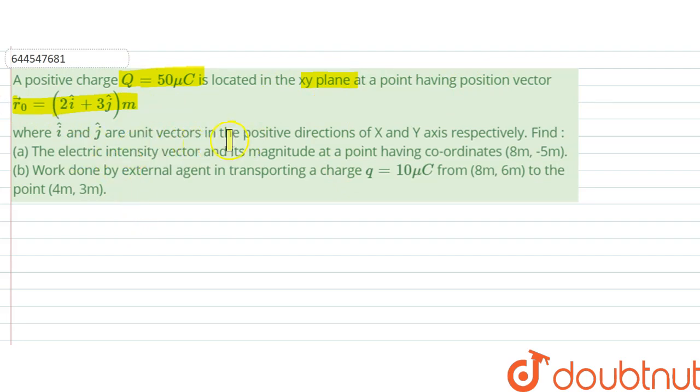where i and j are unit vectors in positive direction of x and y axis. Find the electric intensity vector and its magnitude at a point having coordinates 8 meter, minus 5 meter. So what is the electric field vector here?